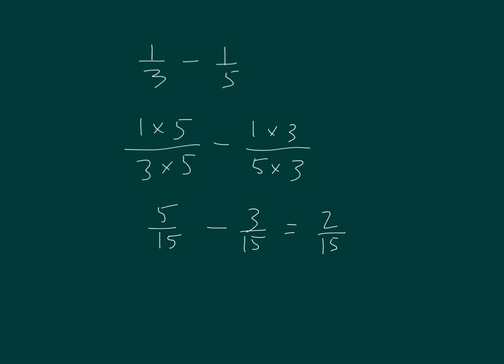So from my subtraction, one-third minus one-fifth, I get two-fifteenths. And two-fifteenths is in simplest form.